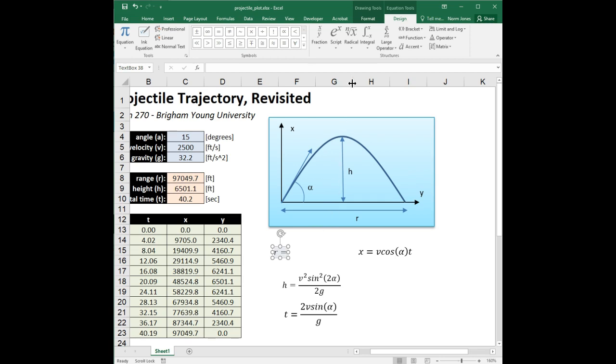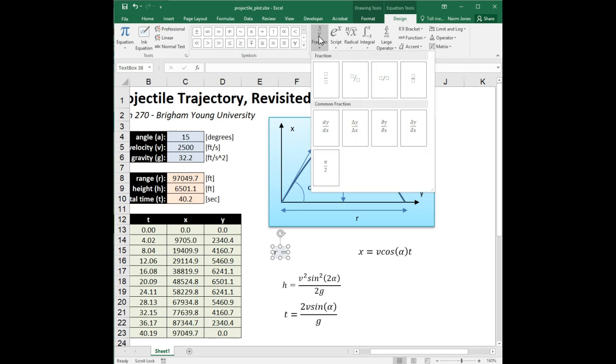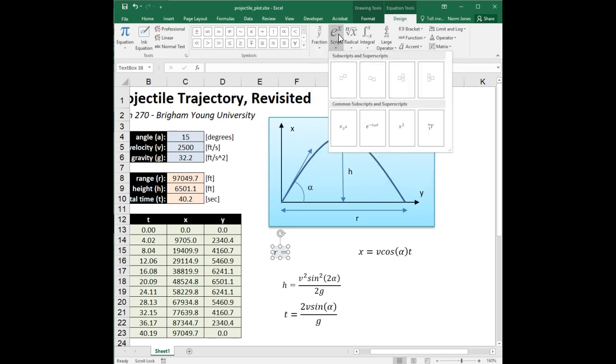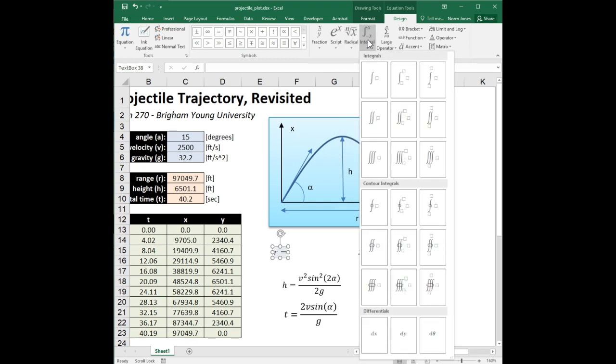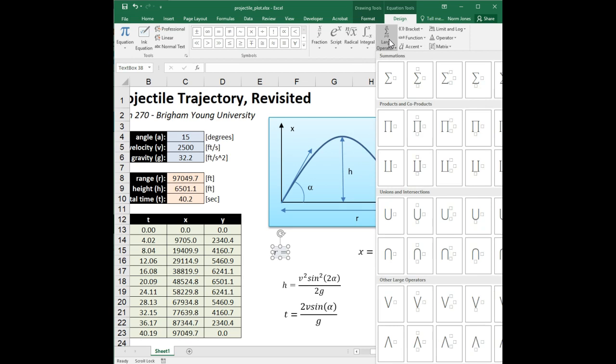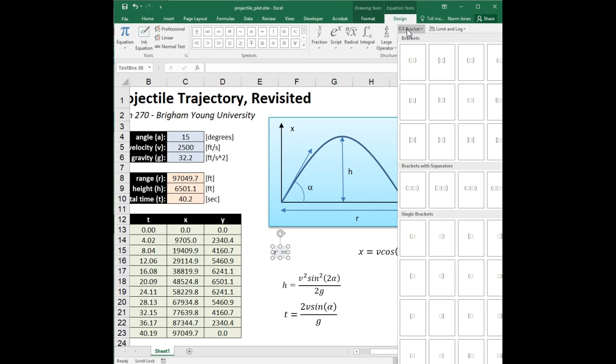Now we need to create a fraction. The way this works is whenever you need to introduce a new element into your equation, you just come up here. Here are fractions, here are various kinds of subscript superscript things, here are some radicals like a square root element. You can do summations and integrals here. You can also do brackets, and why not just type out the brackets? Well, the brackets here will resize based on what you're putting inside them, so they're smart brackets.